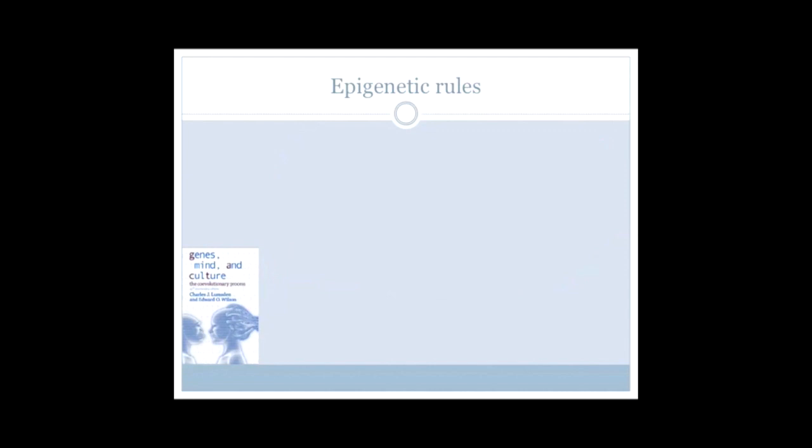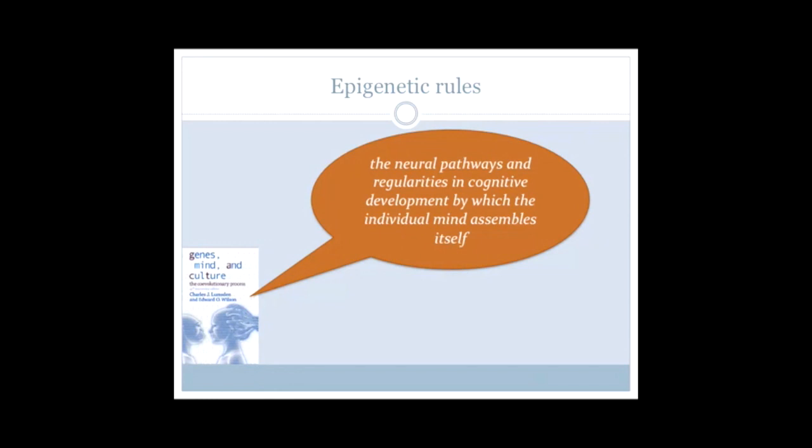And Wilson laid down the epigenetic rules, the neural pathways and regularities in cognitive development by which the individual mind assembles itself. And then individual minds working together, having been assembled from this evolutionary inheritance, produce culture.